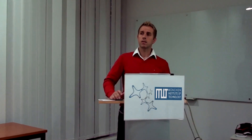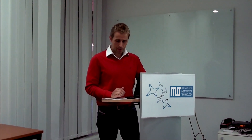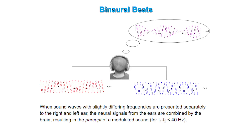And now, let's talk about binaural beats. To achieve a binaural beat, there have to be two frequencies played separately to the right and left ear. The neural signals from the ears are combined by the brain, resulting in the percept of a pulsation called a binaural beat. The big advantage of this procedure is that you can influence brainwaves, because they approach the difference of the two frequencies.